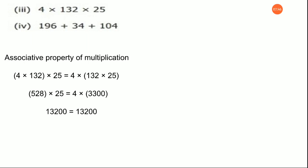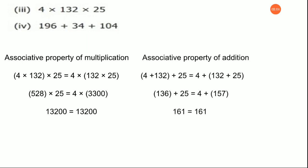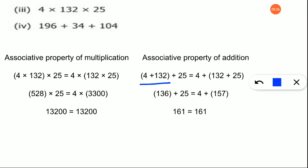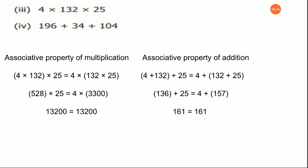For the fourth subdivision, again three values are there — associative property of addition, because there is a plus sign. Four plus 132 is grouped in brackets, then the bracket moves to 132 and 25 on the right hand side. The values are simplified and the final answer is 161 equals 161. So addition and multiplication are associative. You try to solve these sums — maintain all exercise work and homework in one classwork book so that when school reopens we can use it and continue.